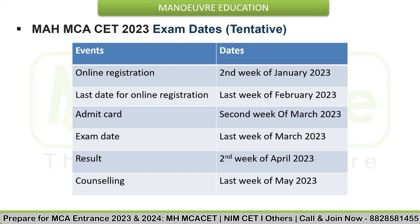Let's discuss exam dates for Maharashtra MCA CET 2023. Note that these are tentative dates, not confirmed. Online registration will commence from the second week of January 2023. The last date of online registration will be in the last week of February 2023. Admit card is expected to be released in the second week of March 2023. The exam is expected to be held in the last week of March 2023. Results are expected in the second week of April, and counseling will commence from the last week of May 2023.